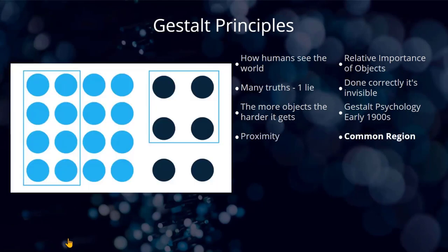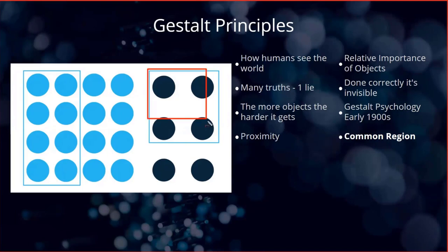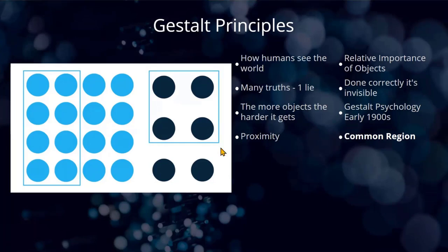The next principle is common region. What we're looking at here is that borders have been deliberately put around things. Because of that border, we think these four objects here are actually related to each other. So it's really important to think about that — it's an opportunity for you to make things seem like they're associated with each other, if they in fact are. That's common region.